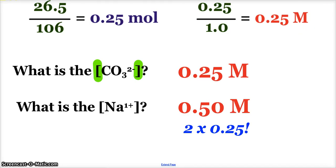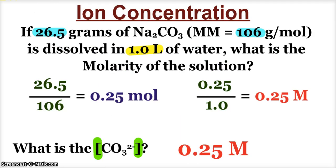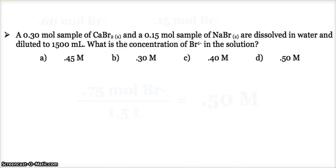All right. I hope I didn't make that too complicated for you. But where we could see this is this nice sample question that I'll end with. It says, okay, we have a 0.3 mole sample of calcium bromide and a 0.15 mole sample of sodium bromide. And we're going to dissolve those in water and dilute it to 1,500 milliliters. What is the concentration of bromide in the solution?